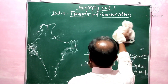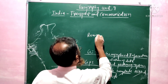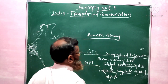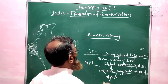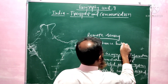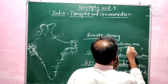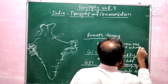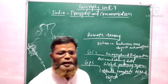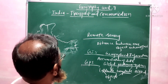The last one is Remote Sensing, which is used to find out the distance between one object and another object. This is the various information given about the transport and communication system in India.